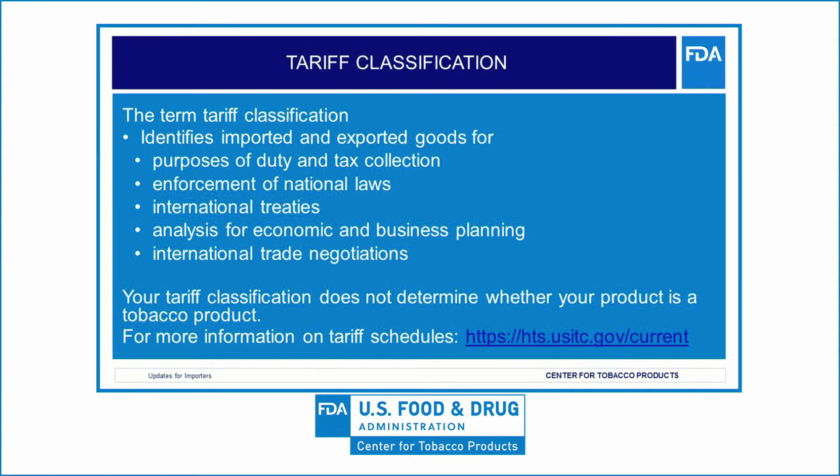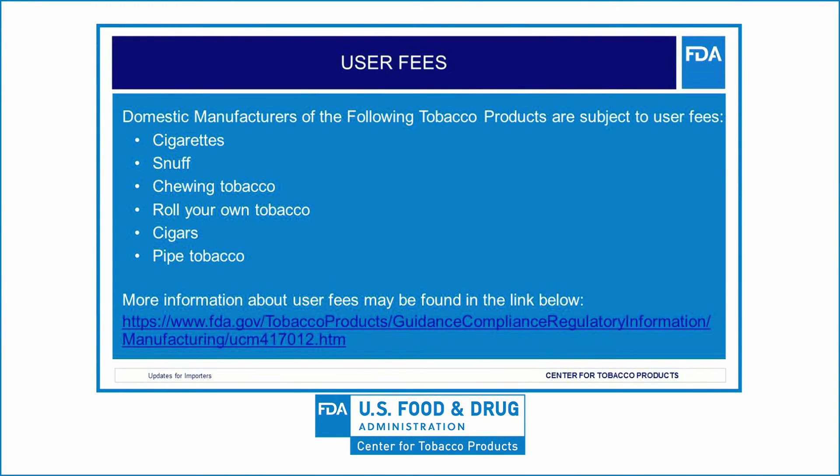The FD&C Act gives FDA authority to collect user fees from domestic manufacturers and importers of certain tobacco products. At this time, domestic manufacturers and importers of cigarettes, snuff, chewing tobacco, roll-your-own tobacco, cigars, and pipe tobacco are subject to user fees. You must submit information required for FDA to calculate assessments and you must pay these user fees. Failure to pay a user fee renders your tobacco products adulterated under Section 9024 of the FD&C Act and subject to possible enforcement action. It is a prohibited act to introduce or deliver for introduction into interstate commerce any tobacco product that is adulterated.